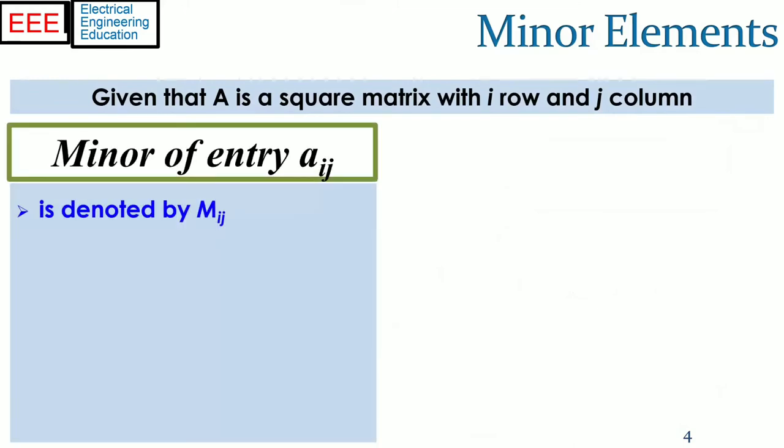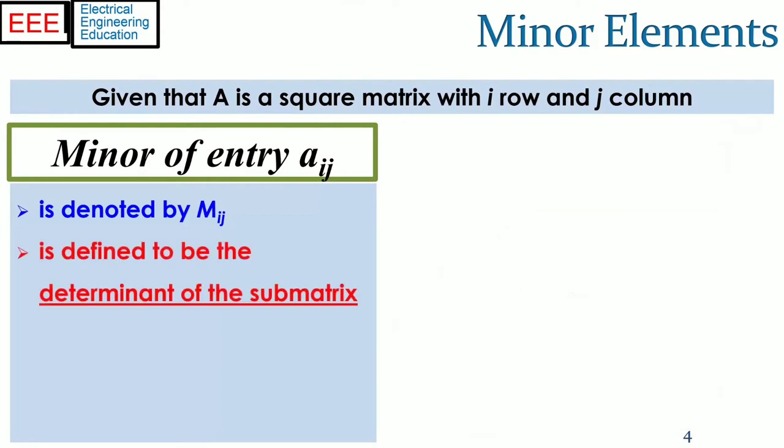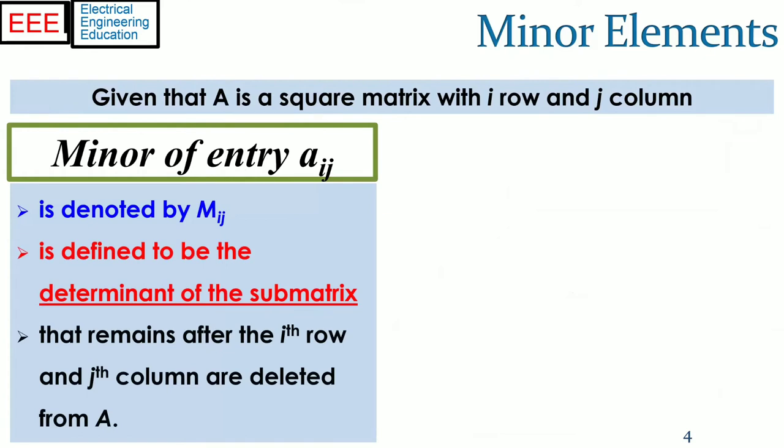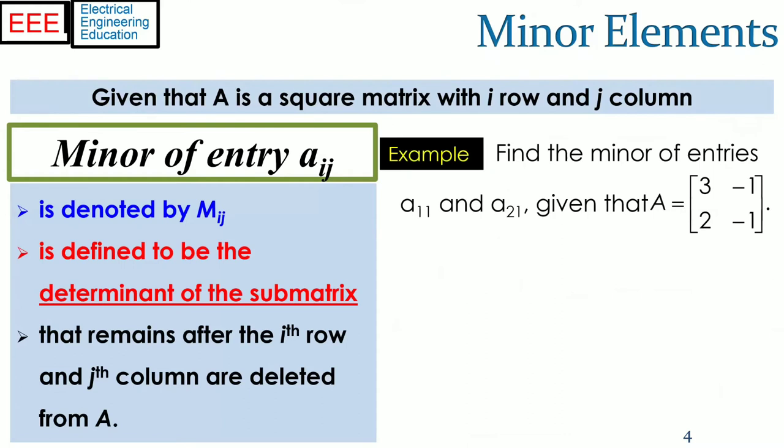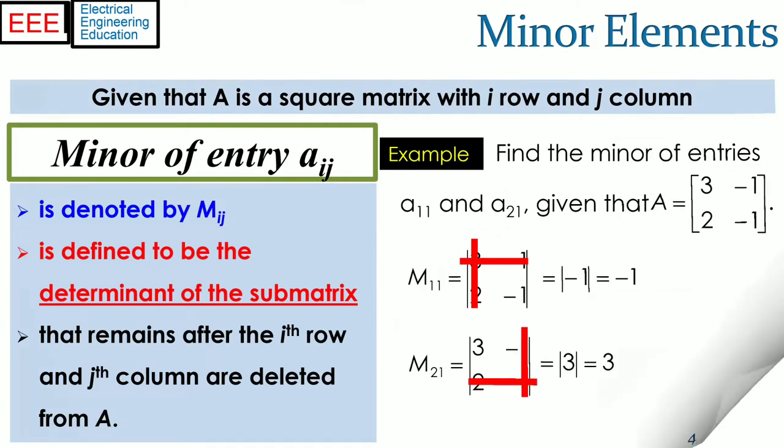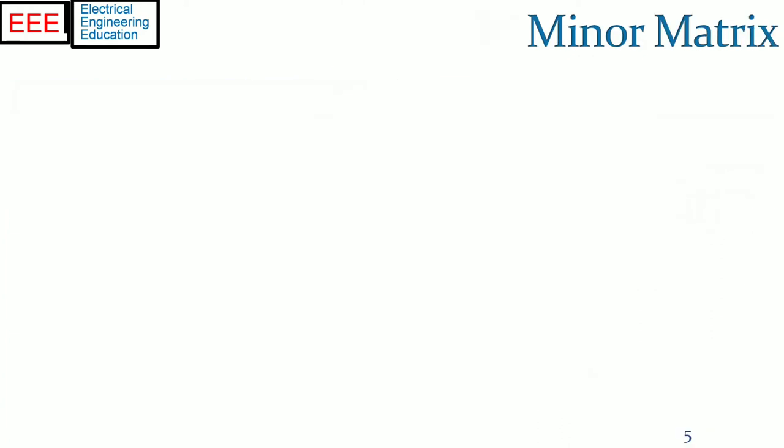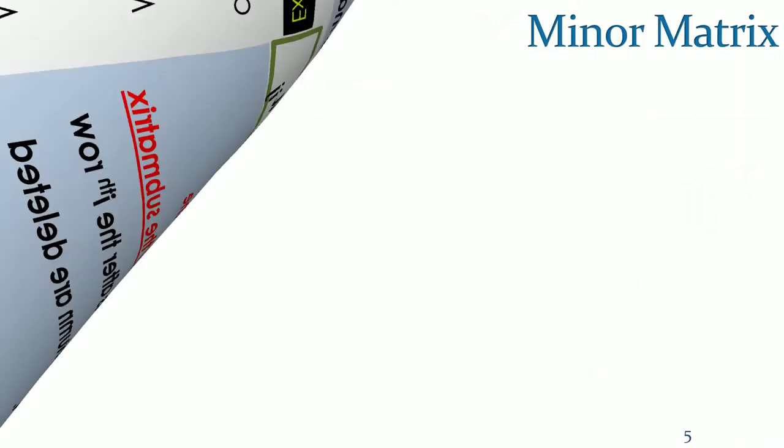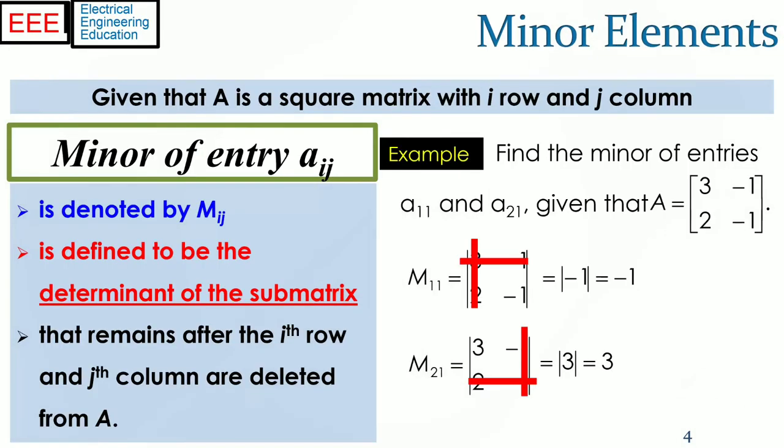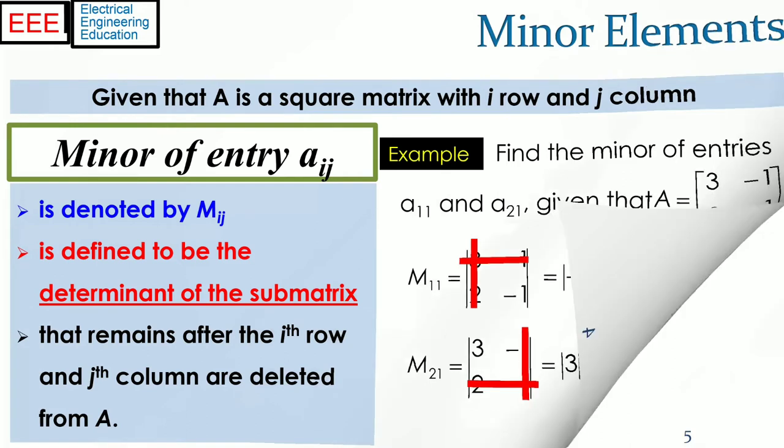Given a square matrix A, the minor of entry corresponding to the i-th row and j-th column is represented by M_ij, and is defined to be the determinant of the sub-matrix that remains after the i-th row and j-th column are deleted from A. For example the M_11 entry of the minor matrix is obtained by deleting the first row and first column. The remaining entries constitute the sub-matrix, the determinant of which is the value of M_11. For M_21, the second row and first column is deleted, and the determinant of the remaining sub-matrix is the value of M_21.